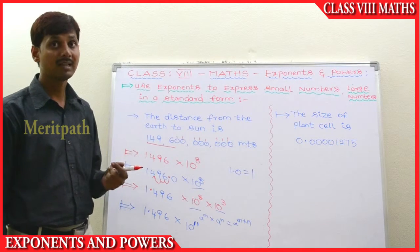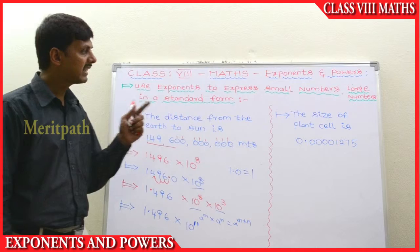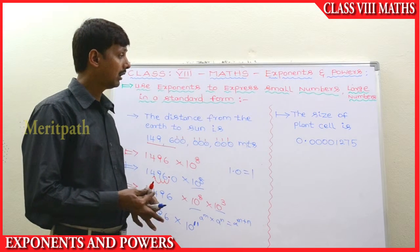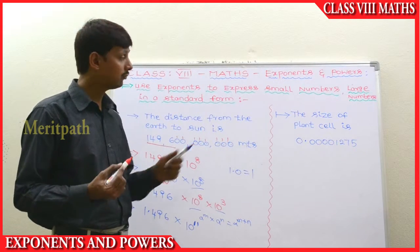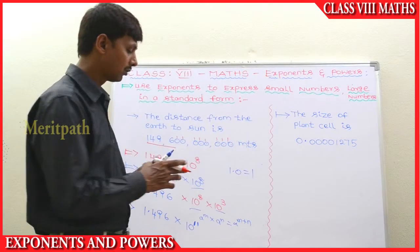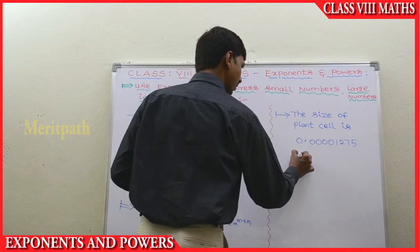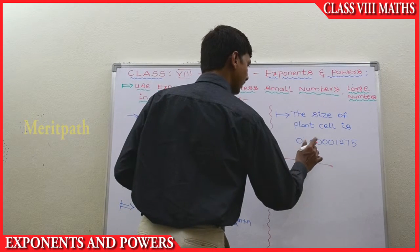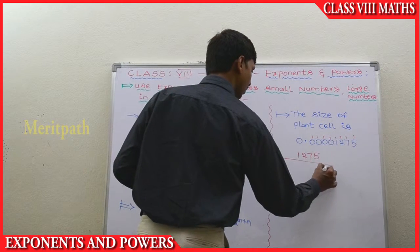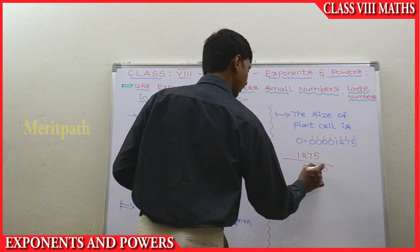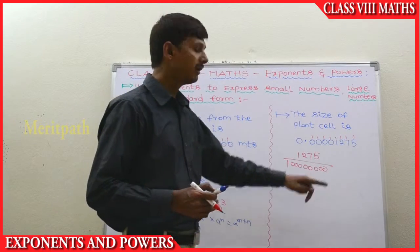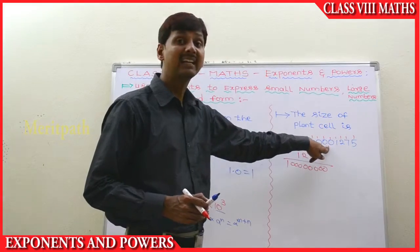Let's go to the next example — it's the smallest number. The size of a plant cell is 0.00001275 millimeters. We need to write this one in standard form. If it is a decimal, we change it to a fraction. So it becomes 1275 divided by the denominator. There are 8 decimal places: 1, 2, 3, 4, 5, 6, 7, 8. So we get 8 zeros in the denominator.